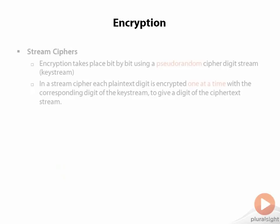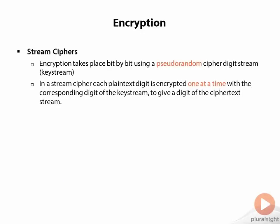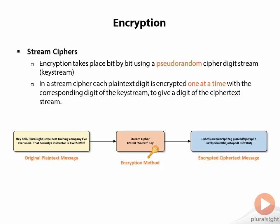Stream ciphers are different from block ciphers. Block ciphers pass and encrypt data block by block, whereas stream ciphers take data as it comes in, bit by bit, encrypting as it goes. Encryption takes place bit by bit using a pseudo-random cipher digit stream, or key stream, that changes periodically. Each plaintext digit is encrypted one digit at a time with the corresponding digit of the key stream, giving a digit output of ciphertext — it streams right through, kind of like pouring water through a filter.